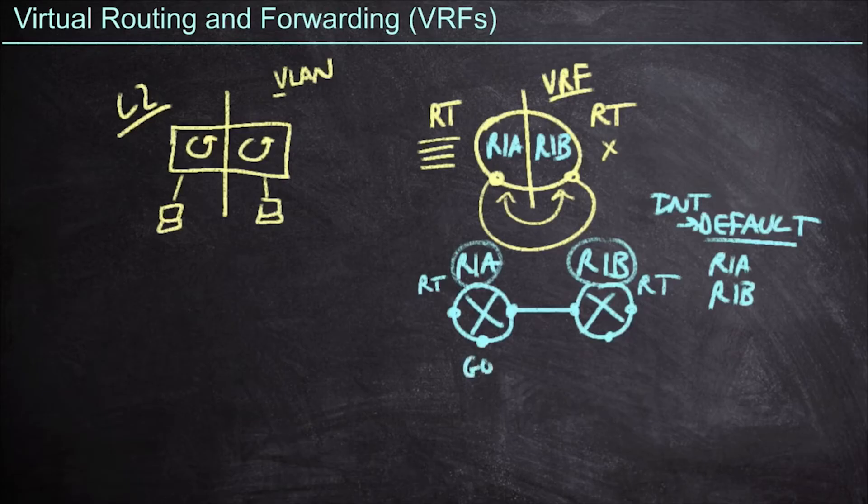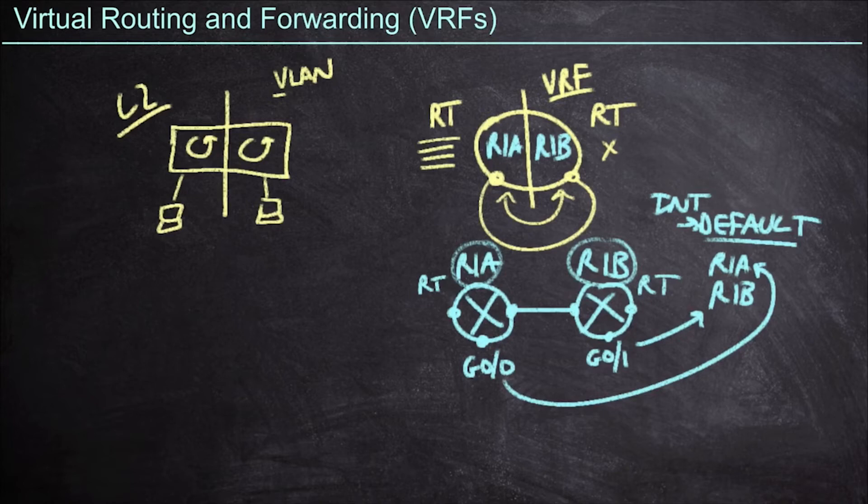For example, I might take gig 0/0 and assign it to R1A. Meanwhile, I might take gig 0/1 and assign it to R1B. Every interface can only be assigned to one VRF. We cannot assign an interface into multiple VRFs. That said, we can use sub-interfaces to get around this from a physical perspective. So we could have a gig 0/0.1 as part of R1A, but then we could do a gig 0/0.2 and assign that to R1B. Every distinct layer 3 interface has to be assigned into one VRF, and yes, that does count sub-interfaces and loopback interfaces.